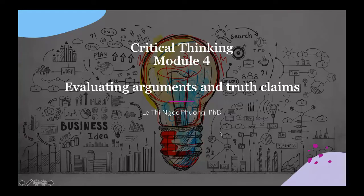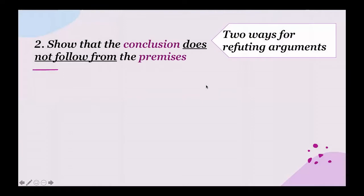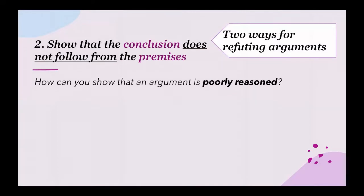Hello again. We just talked about how to refute arguments. The second way for refuting arguments is to show that the conclusion does not follow from the premises, or the conclusion does not succeed logically from the premises. So how can you show that an argument is poorly reasoned? In this method, we focus on the relationship between the conclusion and the premises, not like the first method.